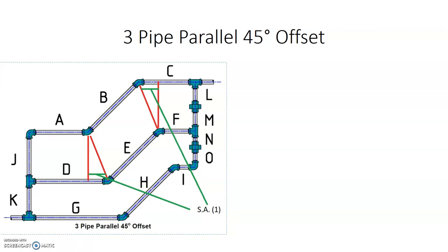Looking at the diagram for a three-pipe parallel offset, we use the spread to calculate the spread allowance in order to lengthen or shorten pipe pieces to maintain that spread throughout the offset. Between pipe B and D, drawing a center line from the center of the 45 of A all the way down to D, we can see D is much longer than A. That extra distance — from the red center line of A's 45 to the center line of D's 45 — is our spread allowance. To calculate spread allowance 1 (SA1), we take the spread between A and D, which is our J measurement, and multiply by 0.414.